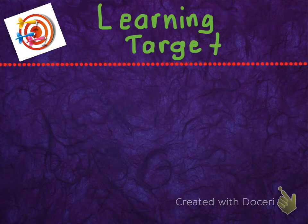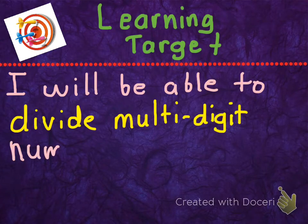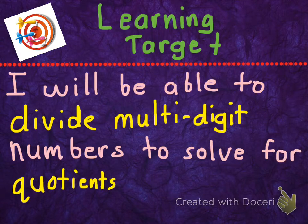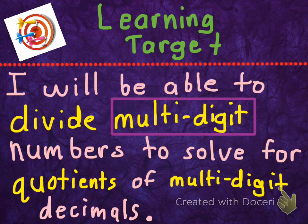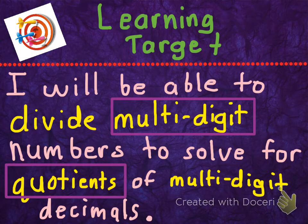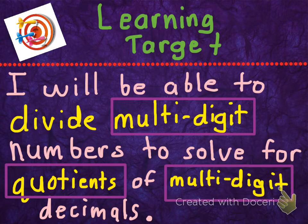Let's go ahead and review our learning targets. Our learning targets are quite beefy today. Our first learning target is: I will be able to divide multi-digit numbers to solve for quotients of multi-digit decimals. I'm going to divide multi-digit numbers — numbers that have more than one digit — and the quotient, or the answer, is going to be a multi-digit decimal.